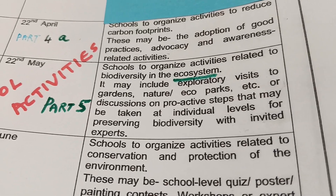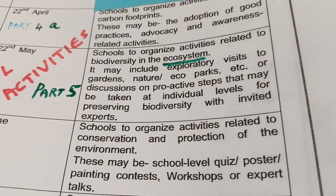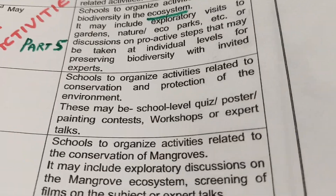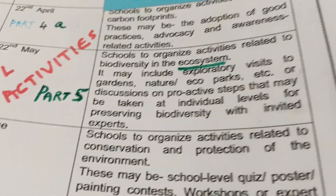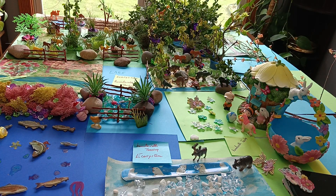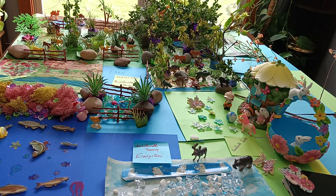Ecosystem and conservation of biodiversity are connected. Let us see what is in the ecosystem. I made a little effort to cover the different types of ecosystems, because within this biome there are different ecosystems. First of all, what is an ecosystem? It is a group of living organisms that live and interact with each other in a specific environment.